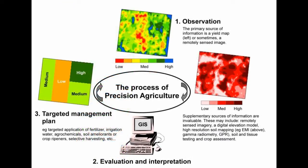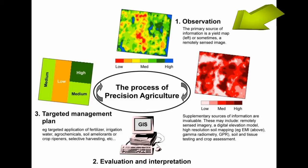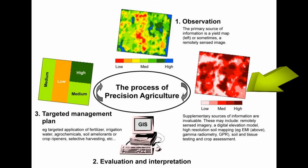Observing variability in the crop is the first step in the Precision Ag process. This is preferably done using yield maps, which require a yield monitor on the harvester, but it can also be done using remote sensing. Next, you want to look at other sources of information which may help in understanding the crop variability — things like soil and elevation maps, soil tests, and records of farm inputs like fertilizers and herbicides.